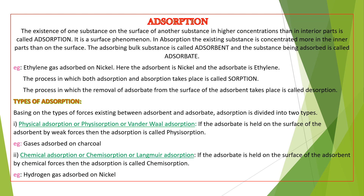In the definition of adsorption, we have seen one substance on another substance. So what are these two substances named as? The adsorbing bulk substance is called the adsorbent, and the substance which is being adsorbed on the surface of the adsorbent is called the adsorbate. For example, ethylene gas adsorbed on nickel — nickel is the adsorbent and ethylene is the adsorbate.